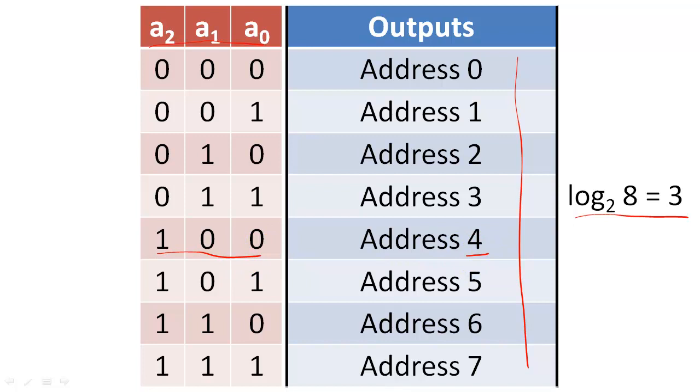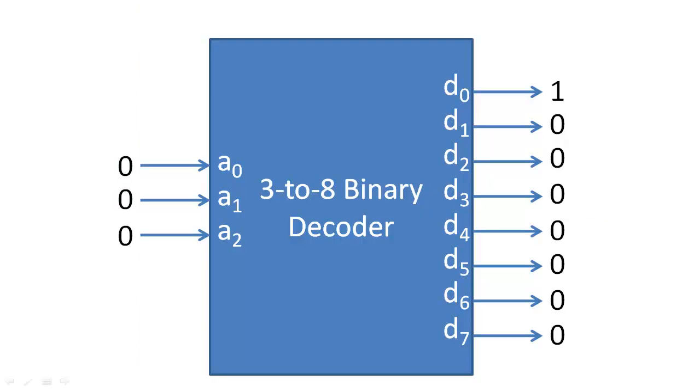Now, what we want to create is a decoder circuit that will send a high voltage out on one line at a time so that exactly one address is activated at a time.